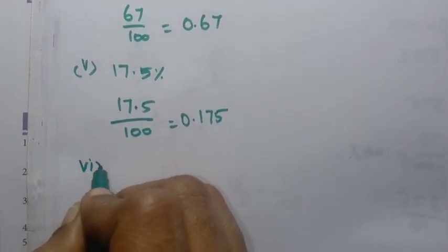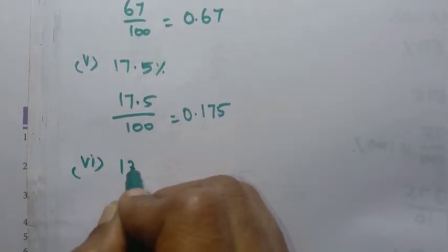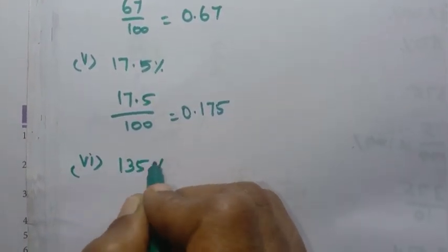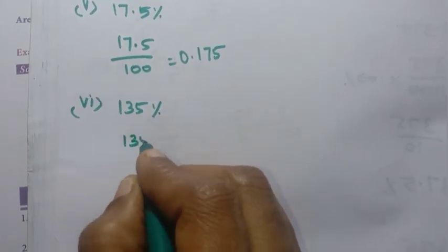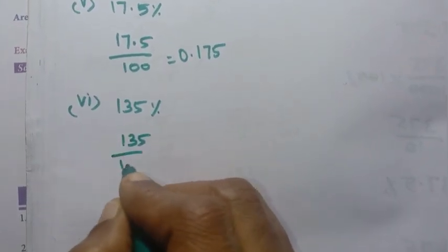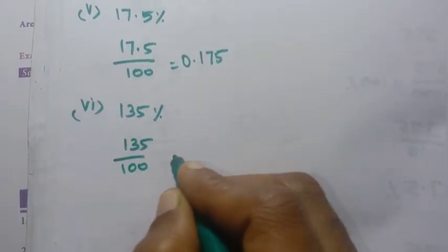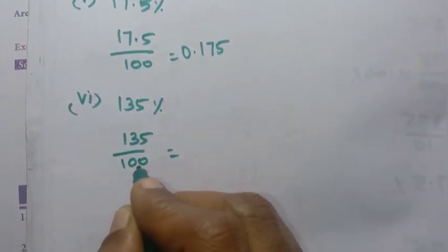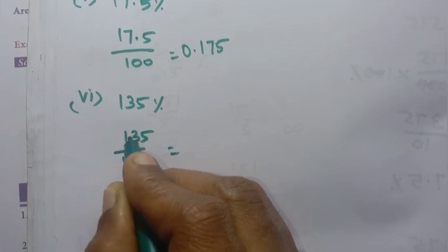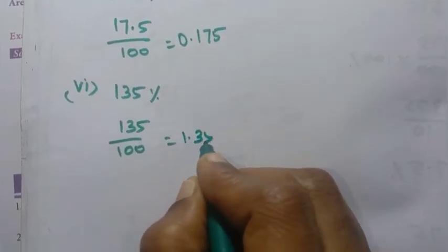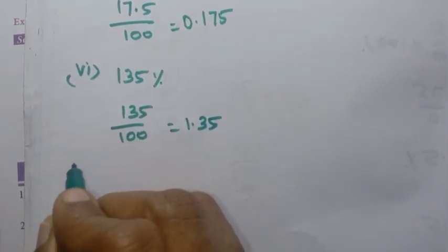0.175. Then 6th sum: 135 percentage. 135 by 100 — 1, 3, 5. 2 places. So 1, 2. So 1.35 decimal.